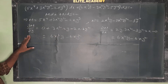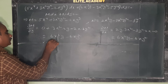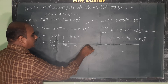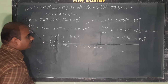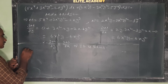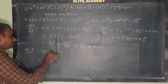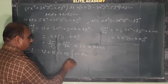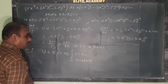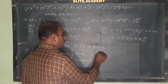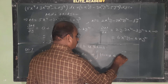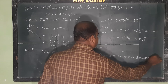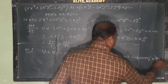By observing these two values, we get ∂M/∂y = ∂N/∂x. Therefore, it is exact. The general solution is: ∫M dx (treating y as constant) + ∫(terms of N not containing x) dy = c.